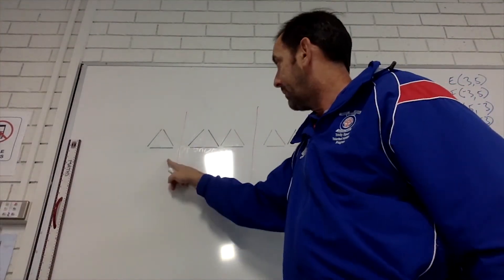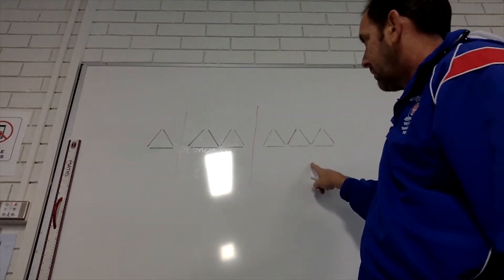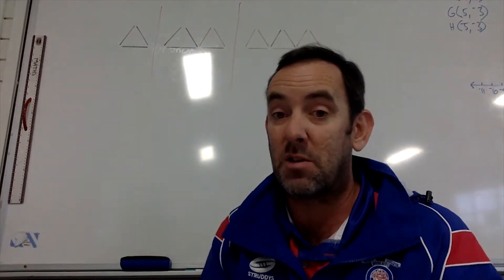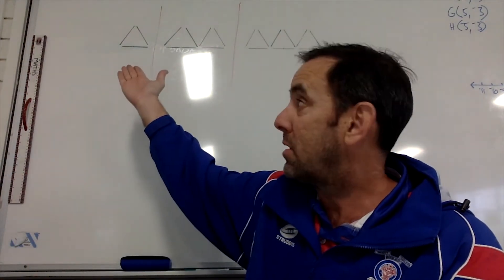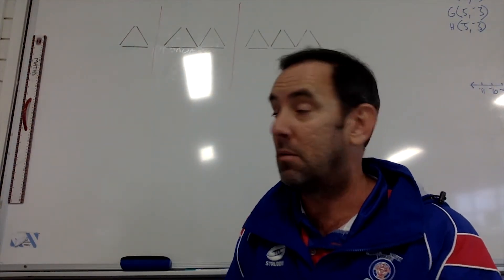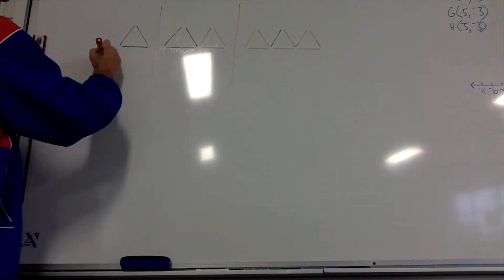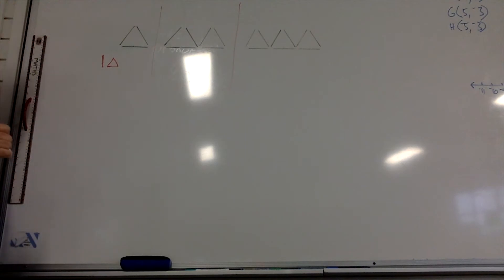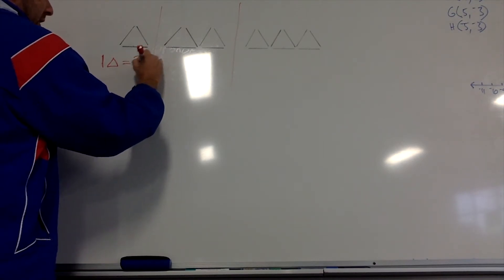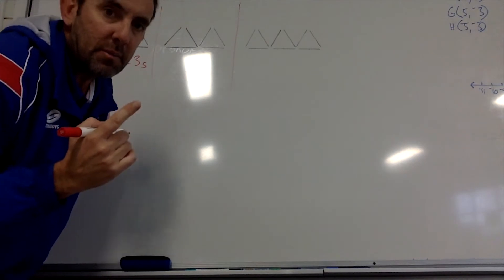We've got one triangle here. Now if you look at the first triangle and you count the number of matchsticks, there are three matchsticks and it makes one triangle. So one triangle equals three sticks.